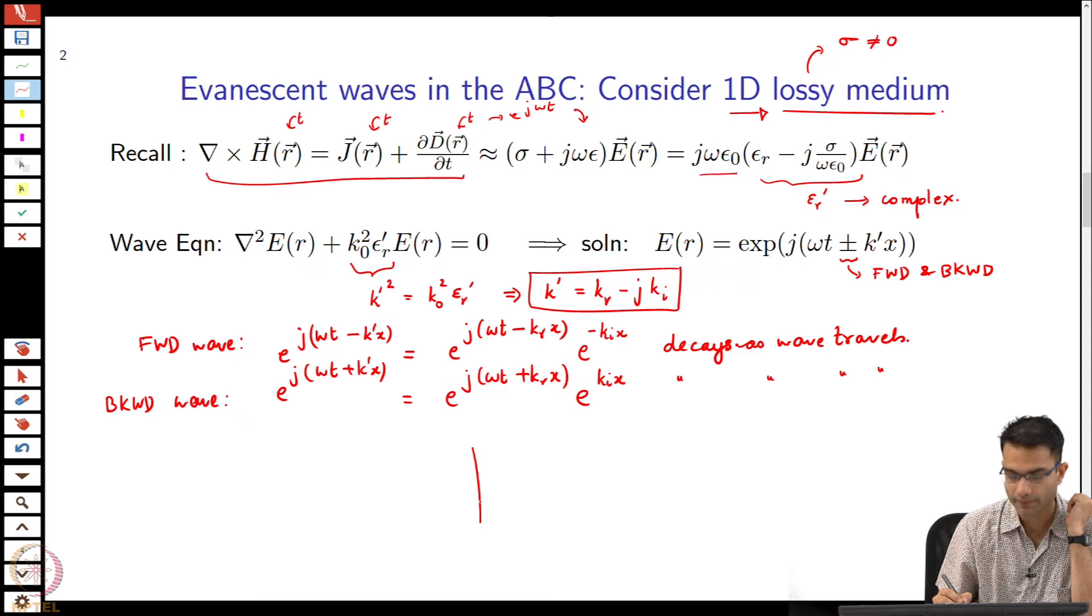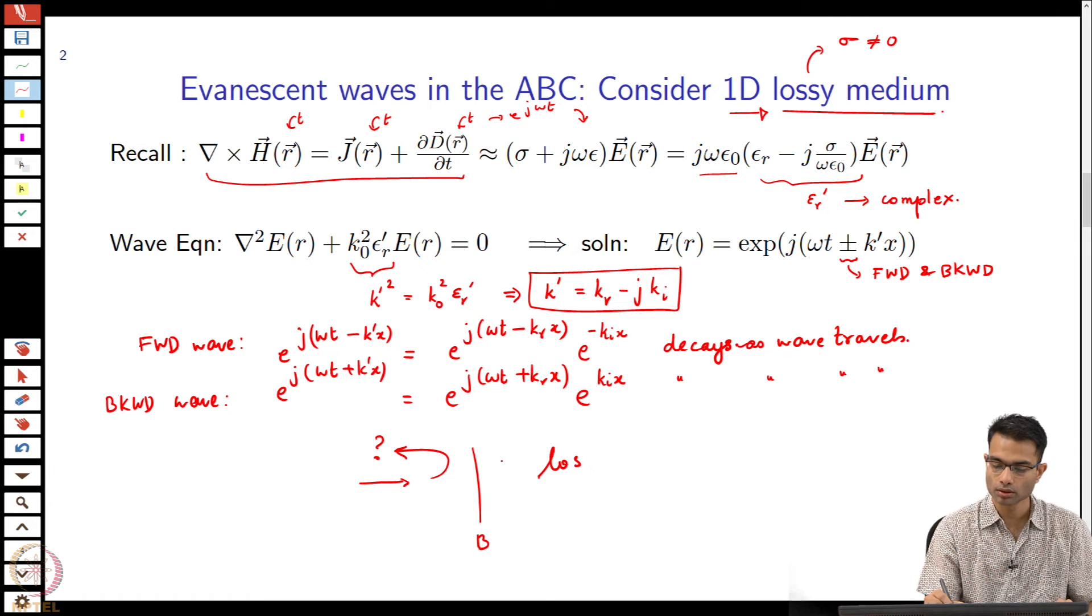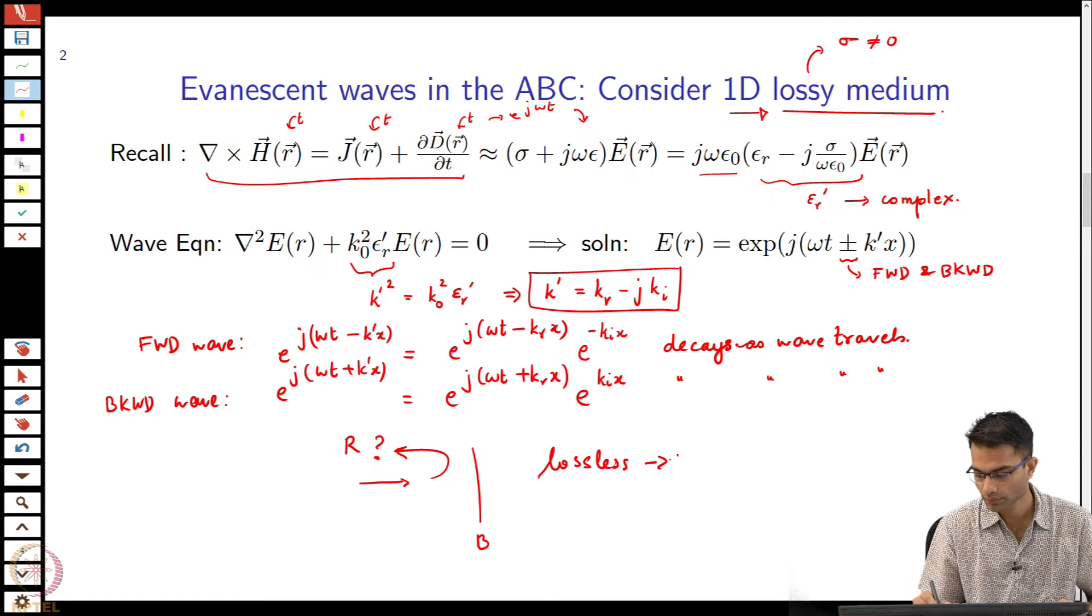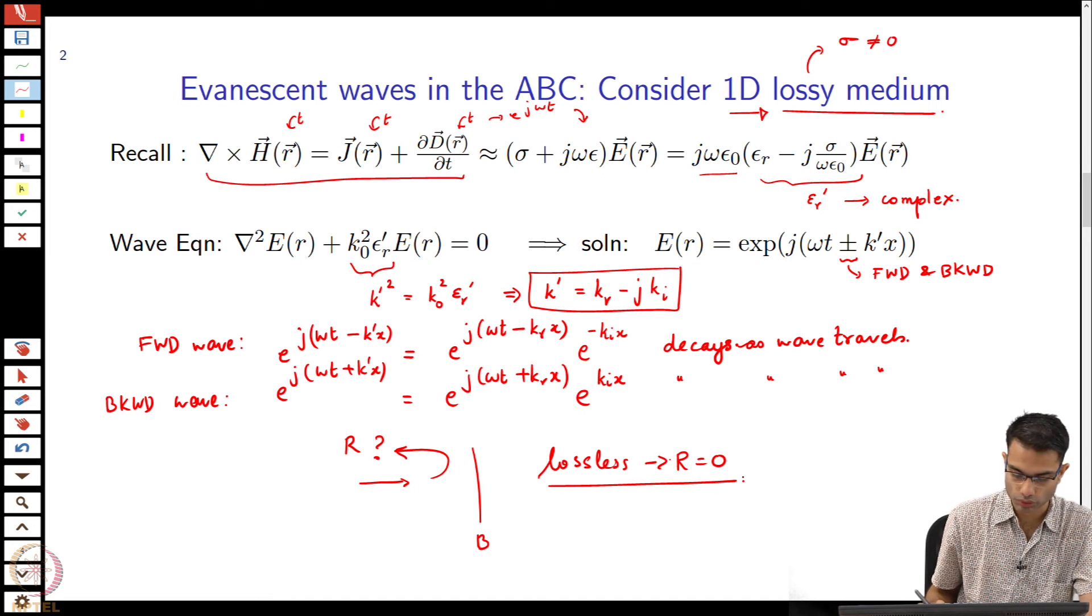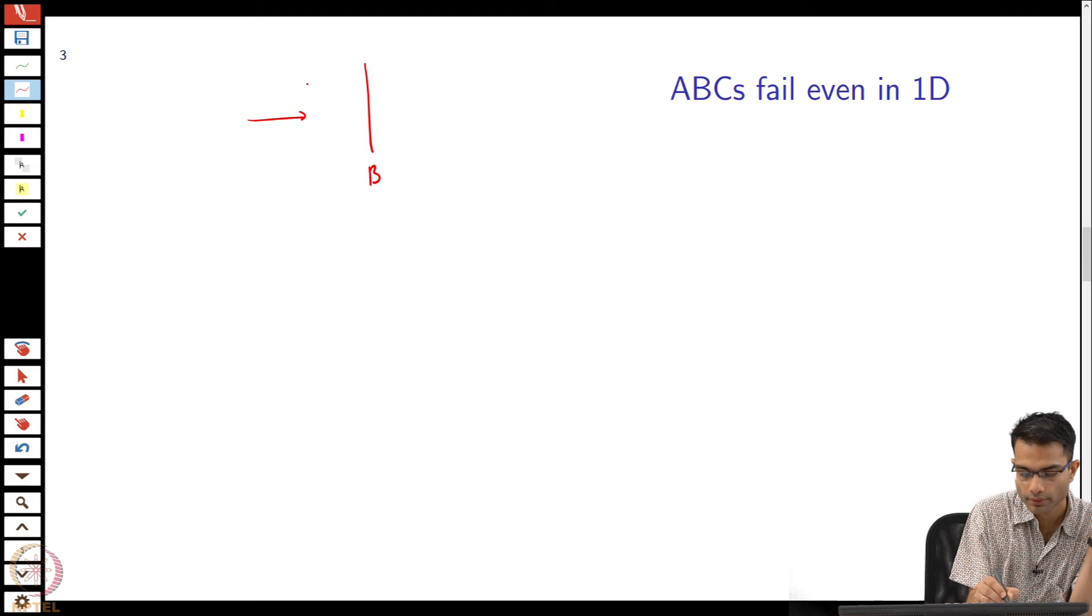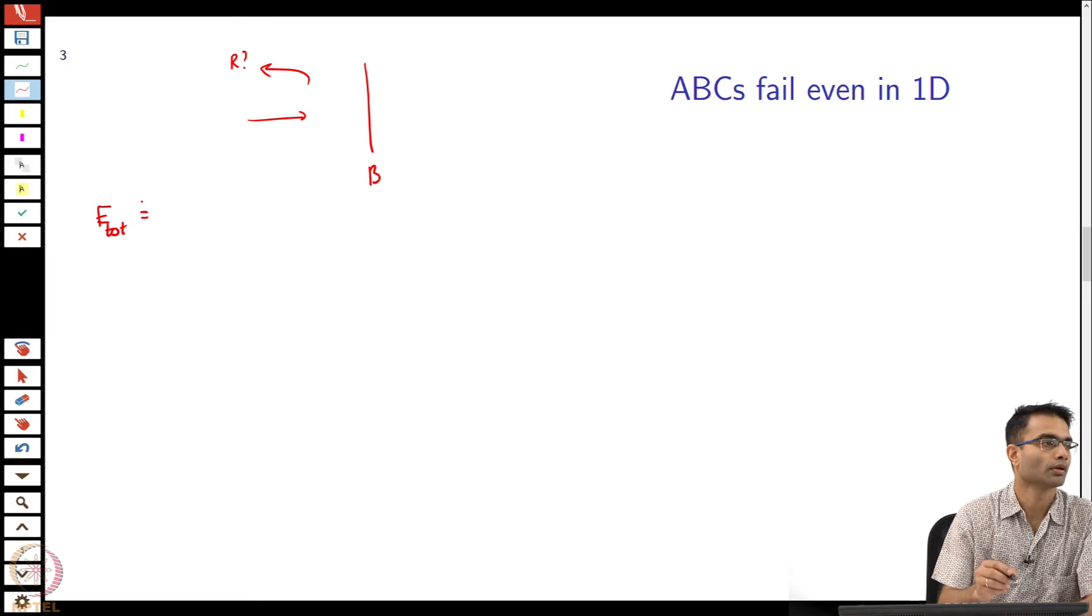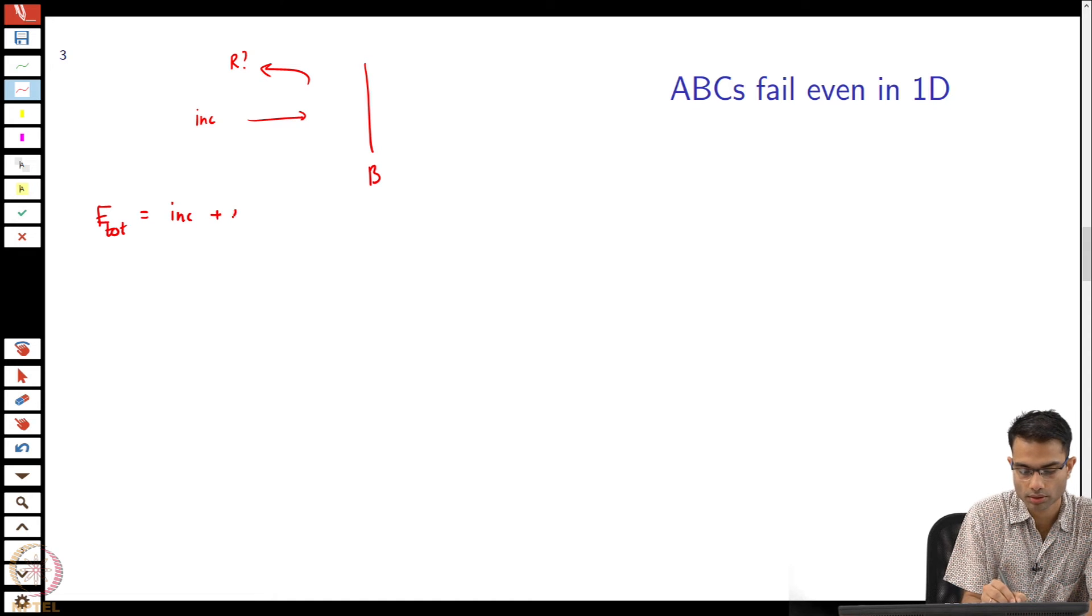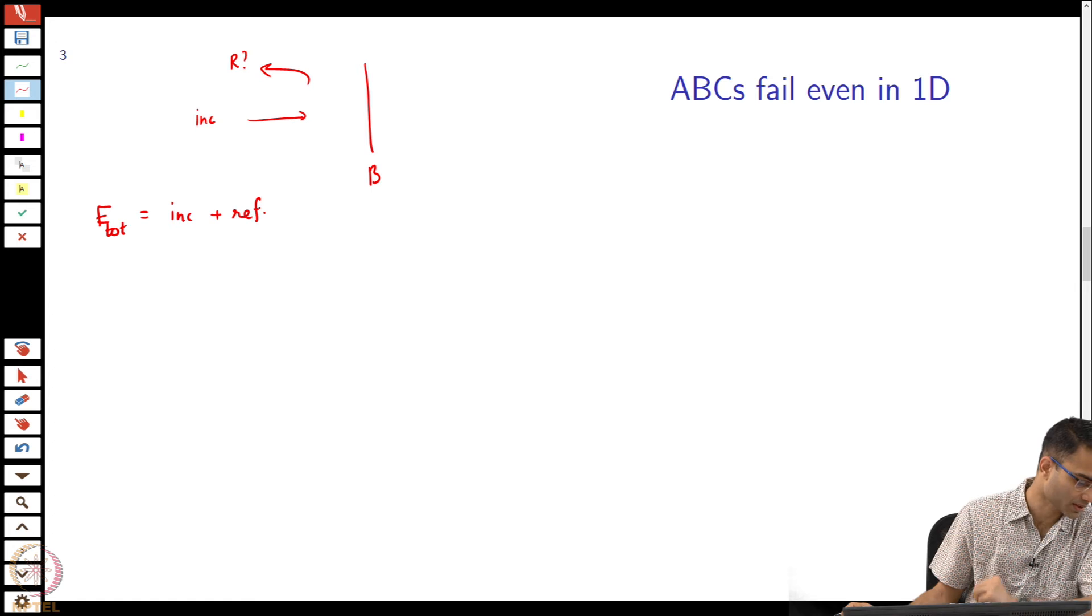Now what do we do? The situation we are considering is: this is my boundary and I have a wave that is incident over here and we are asking is there a reflection. When the medium was lossless we saw that r was equal to 0, you already seen that, but now what happens? What do I have as the total field over here? The total field is going to be incident plus reflected.